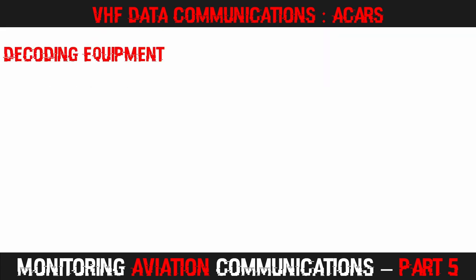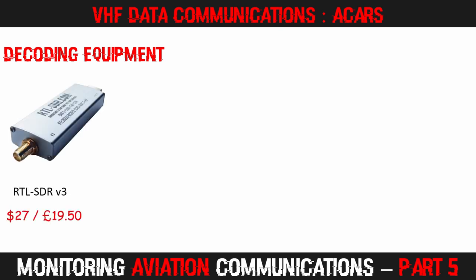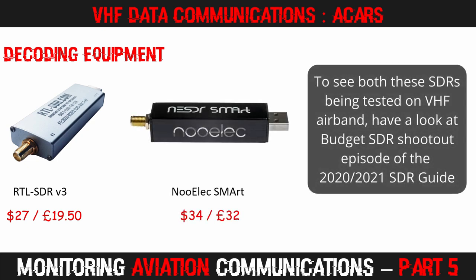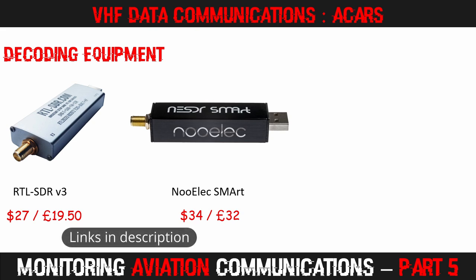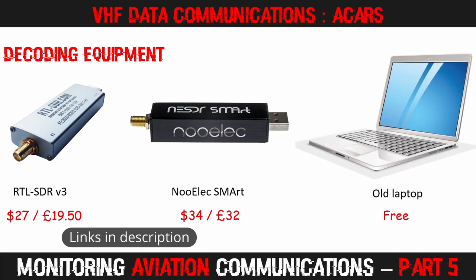To decode, all you need is a basic software-defined radio and a computer. For this episode I used an RTL-SDR V3 dongle when decoding on my Windows machine and an ULEC NESDR Smart version 4 for decoding on my Linux computer. These are both high-quality budget SDRs that are perfect for decoding aviation data. In fact, I leave mine running 24-7 decoding both ACARS and VDL2 messages. There are purchase links to both of these SDRs in the description below. My Windows and Linux laptops are both over 10 years old and I obtained them for free when they were retired from active duties at my workplace, so this part of my monitoring station certainly qualifies as being frugal.